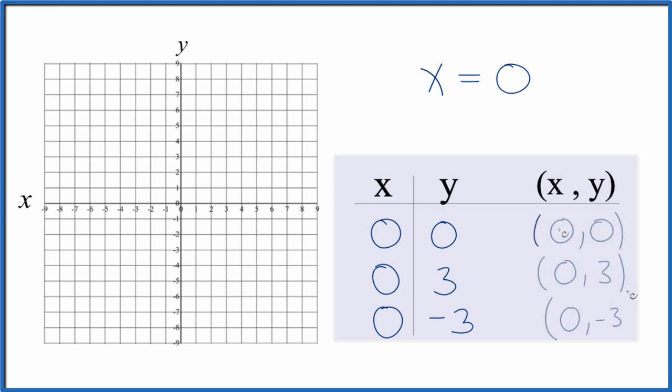So these are the points we can plot for the graph of x equals 0. So 0, 0, that's right there at the origin. x is 0, y is 3. And we said x is 0, y is negative 3.